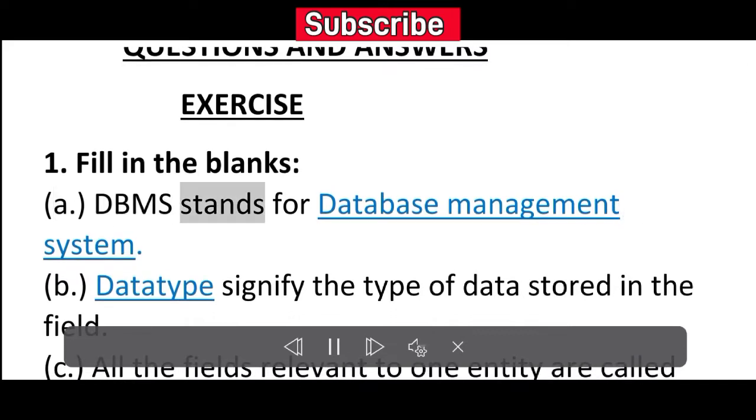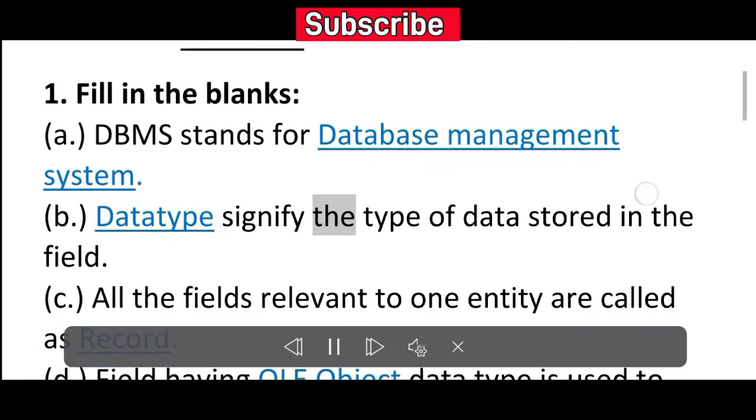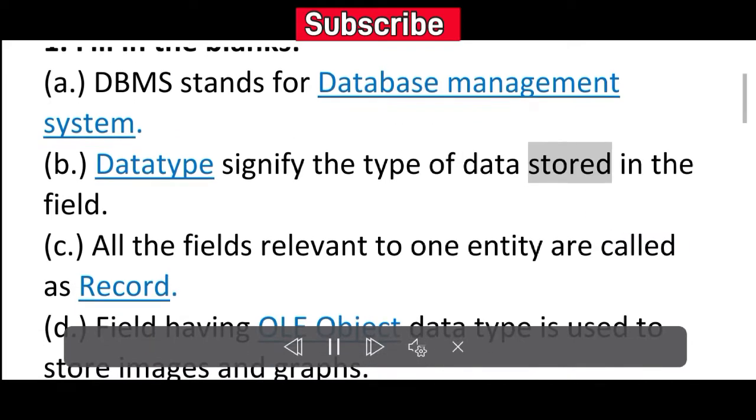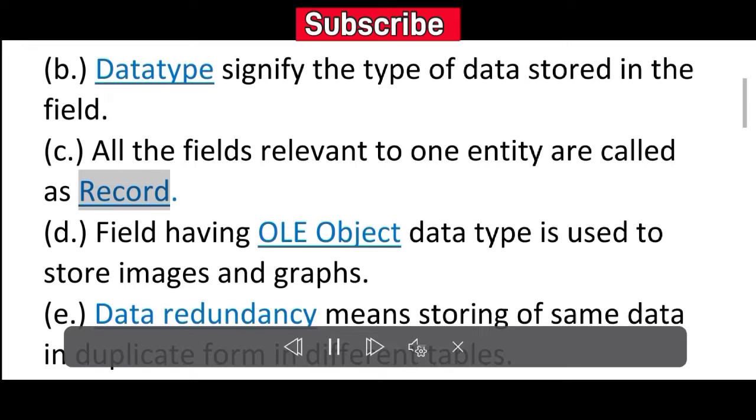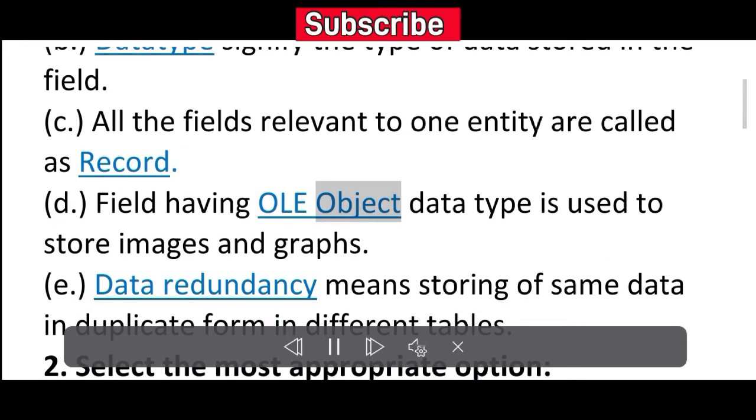A. DBMS stands for Database Management System. B. Data type signifies the type of data stored in the field. C. All the fields relevant to one entity are called a record. D. The field having only object data type is used to store images and graphs.